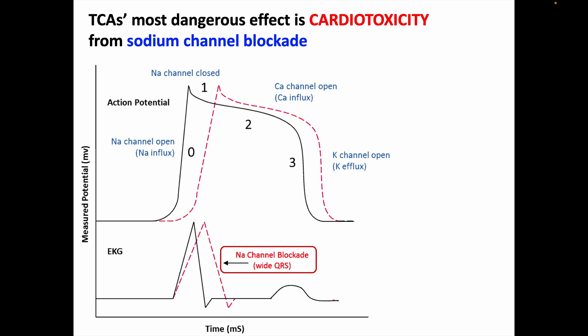The graph on top represents the cardiac action potential, and the lower graph shows the corresponding EKG tracing. The black lines represent the normal state without sodium channel blockade. Normally, depolarization in phase zero is very rapid — sodium rushes into cells through voltage-gated sodium channels — corresponding on the EKG to a fast, narrow QRS complex. In the presence of sodium channel blockers, sodium influx is impaired, decreasing the slope of phase zero and manifesting on the EKG as QRS widening.